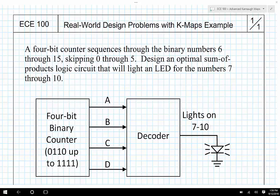Here we're going to have a 4-bit counter that's going to count the numbers 6 through 15. Just as a note here, this number is equal to 6, and this number is equal to 15. We're going to skip 0 through 5. Right away I can spot that means those are going to be don't-care cells in the K-map.